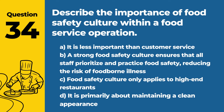Question 37. Explain the role of food packaging in maintaining food safety. Answer: B. To protect food from contamination and tampering, and to provide information on handling and expiration. Proper packaging is crucial for safeguarding food from external contaminants and providing critical safety information.